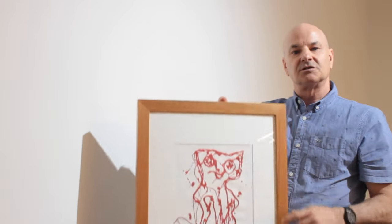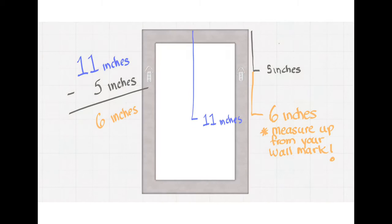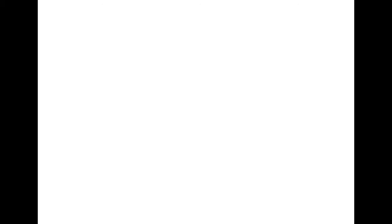So the middle of the painting will be at 11 inches. So that's the number you need to consider. And then from there, you take a measurement from the top of your painting to the top of the D-rings.